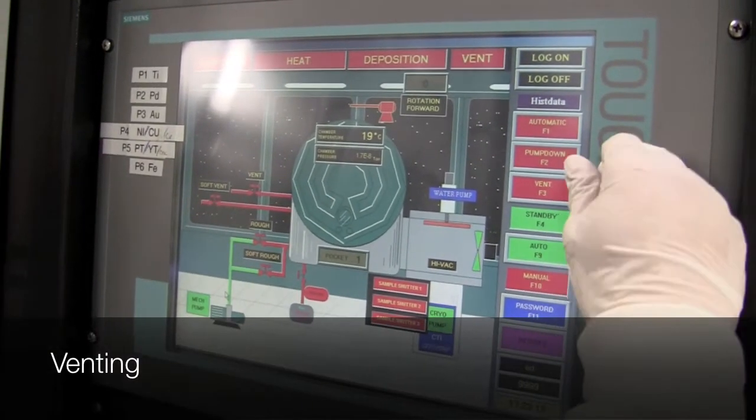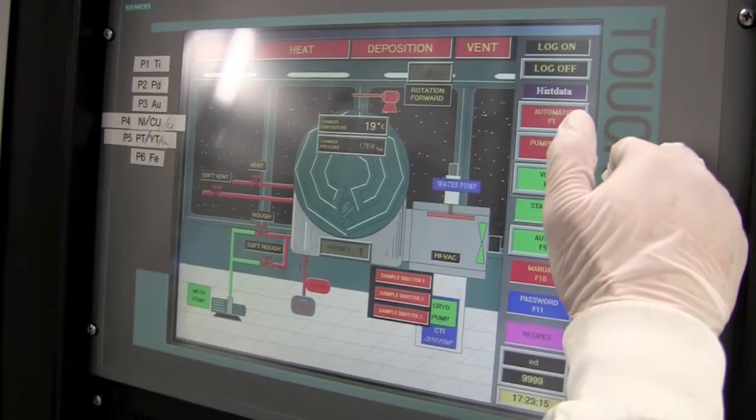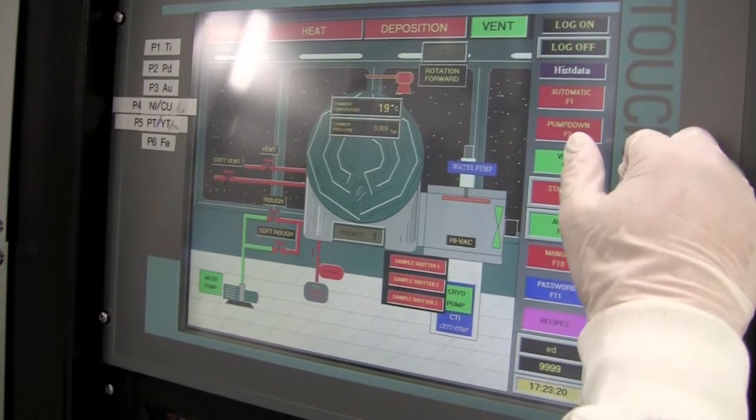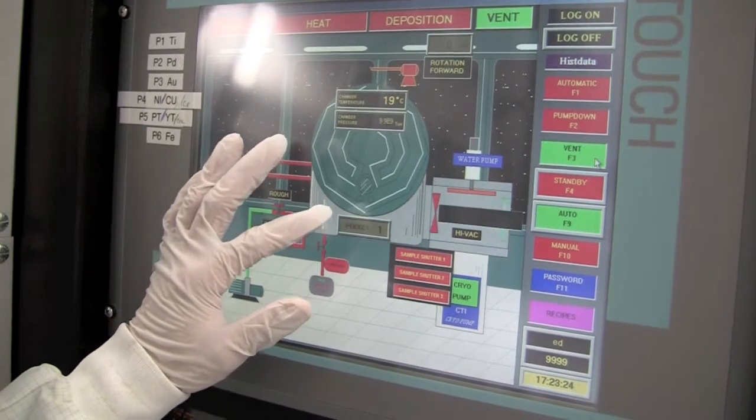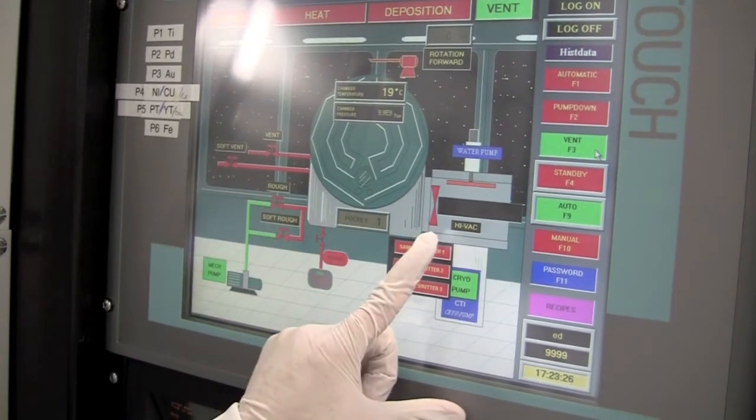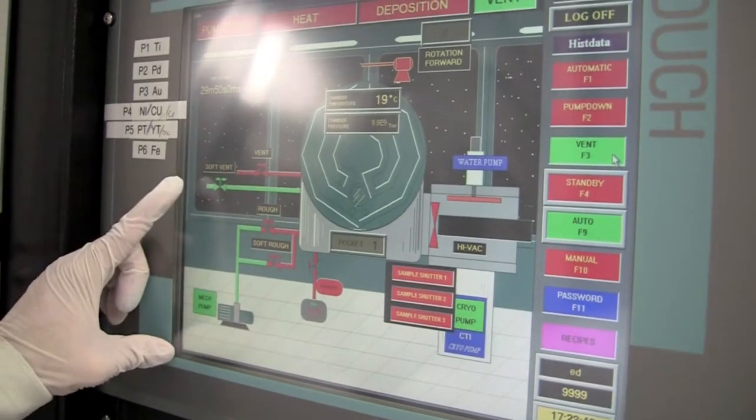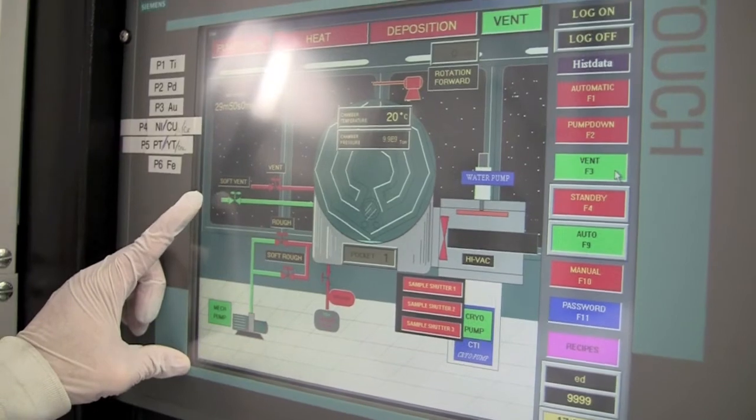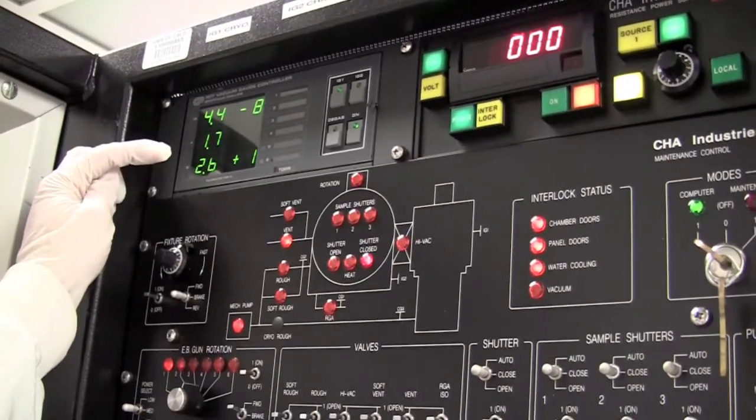We are now ready to vent the chamber and I'll do that by pushing vent. You can see that after I push vent the GUI will start showing an animation of gas going into the chamber. We can also see that the high vac is now closed. We can see that the soft vent has turned on. And we can verify that the chamber pressure is starting to rise.